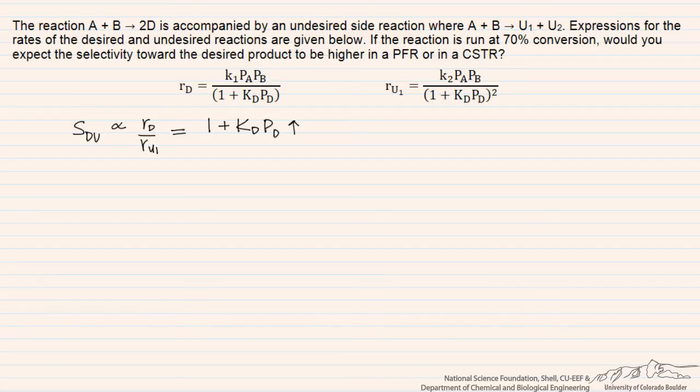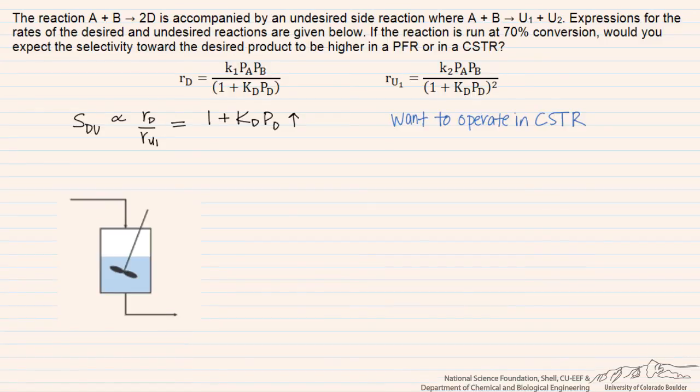So the question asks, would we want to use a PFR or a CSTR for this when we're operating at 70% conversion? And the answer is that we'd want to operate in a CSTR. A CSTR will operate so that the entire contents are at a conversion of 70%, where the partial pressure of the desired product is high.